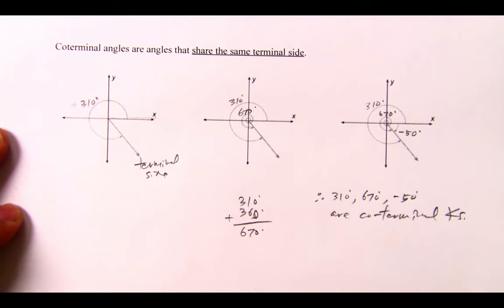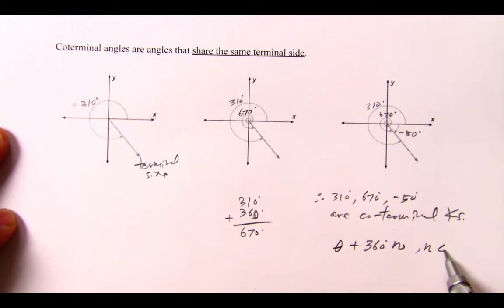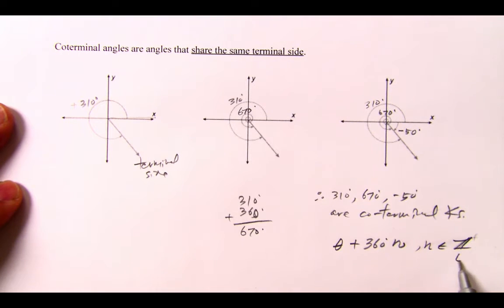So how do you find co-terminal angles? Whatever the angle may be, theta plus 360 times n, where n is an integer value.